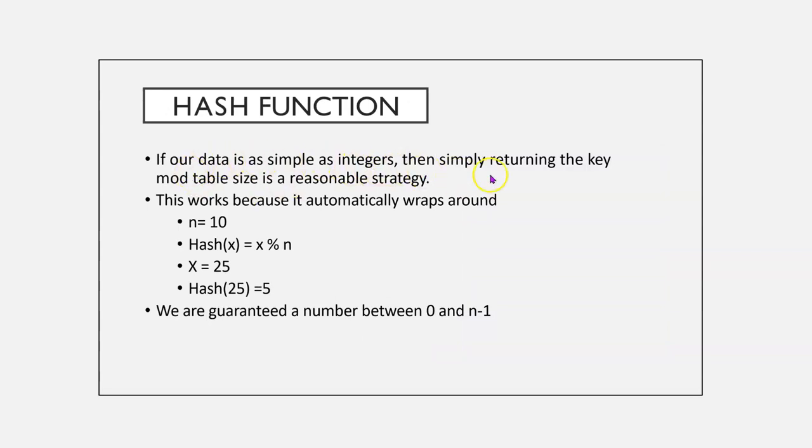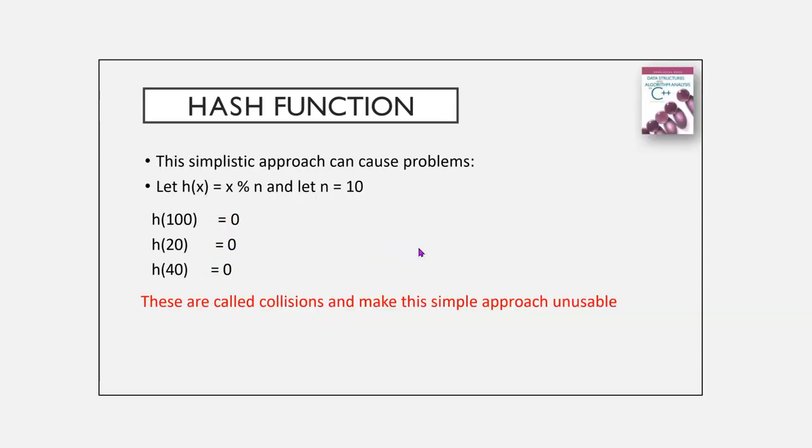If our data is as simple as integers, then simply returning the key mod the table size is a reasonable first approach. This works because it automatically wraps around. So, if n equals 10, hash of x, where x is x mod n, well, if x equals 25, the hash will be 25. We're guaranteed a number between 0 and n minus 1.